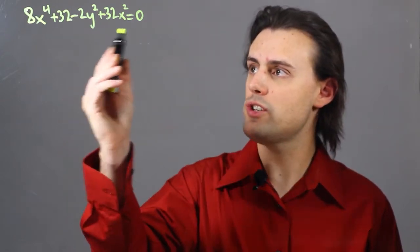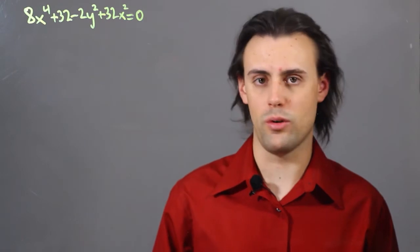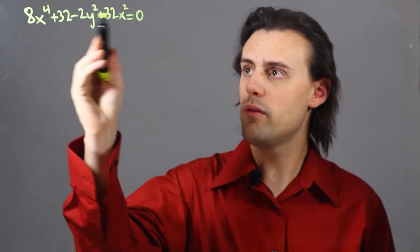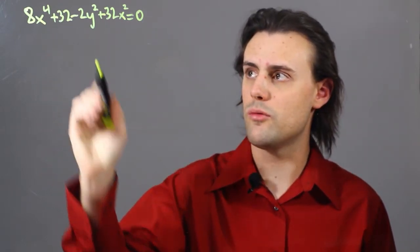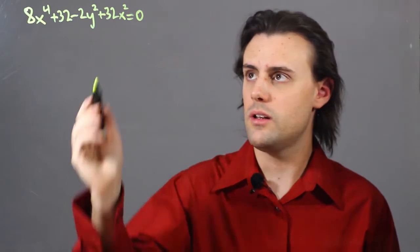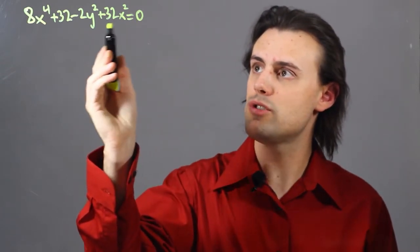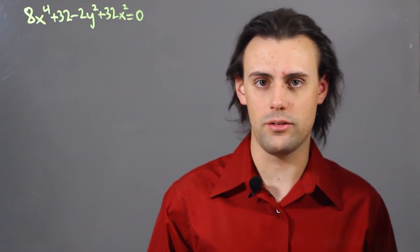If we're given an equation that is in implicit form, that means that all of the dependence on the variables is on one side of the equation, and we set it usually equal to zero on the other side.